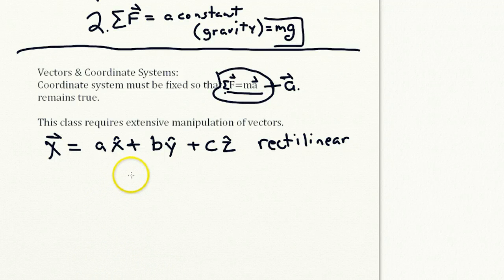Now a second case, we could write the same position vector here in this way, where I'm going to write it with different scalars.